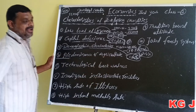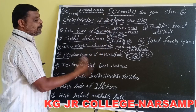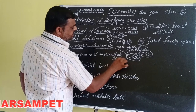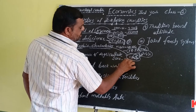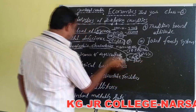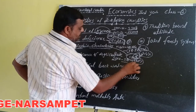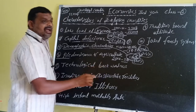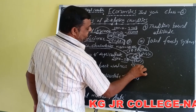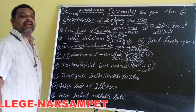Another important characteristic is the predominance of the agriculture sector. Developing countries are also called agricultural countries. In India, according to 2010–11, 51.1% of the working population is engaged in the agriculture sector. However, agriculture contributes only 13.9% of GDP.